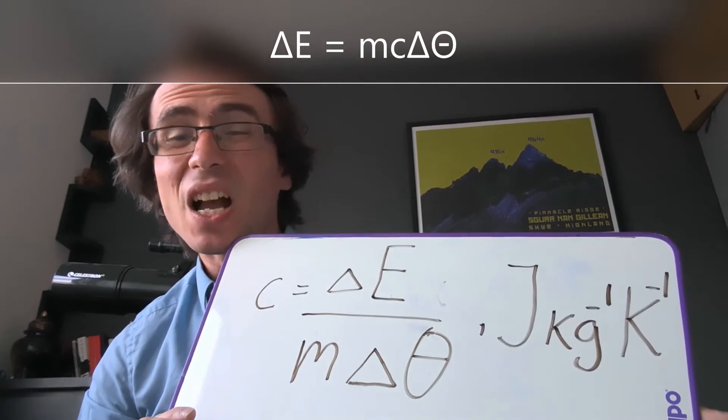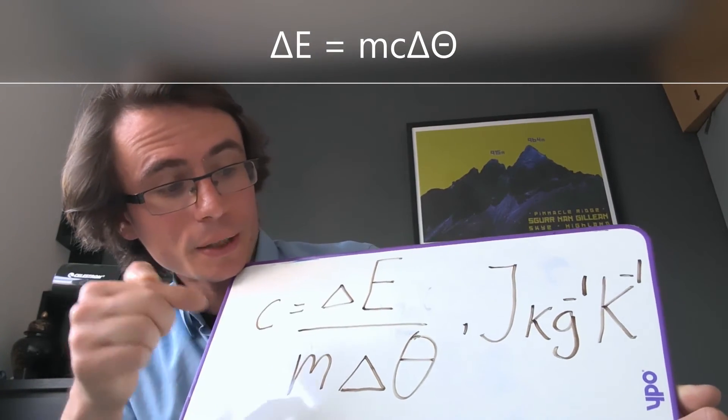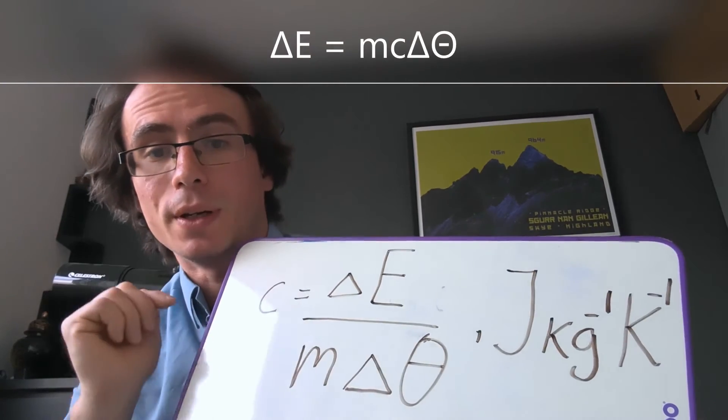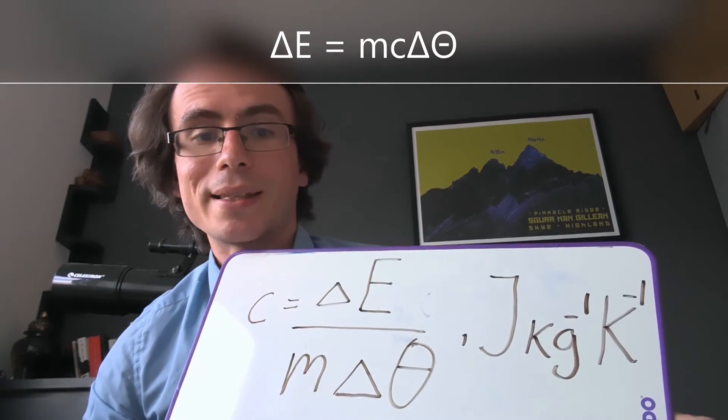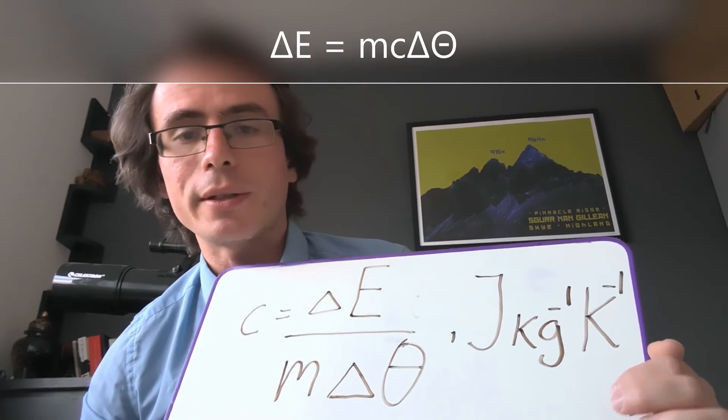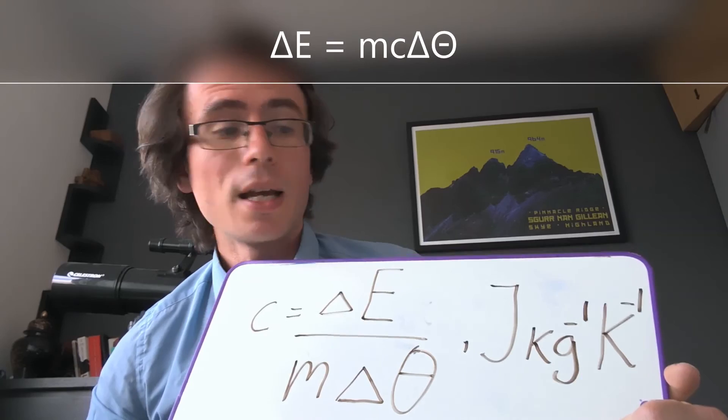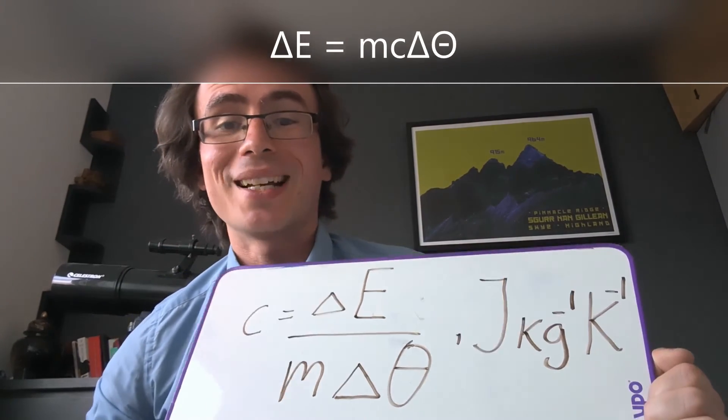The SI units for specific heat capacity are therefore joules per kilogram per Kelvin. Remember, anytime you're dividing, you can also express this with a fraction raised to the power of minus one. And we can summarize the units of specific heat capacity as joule per kilogram per Kelvin.